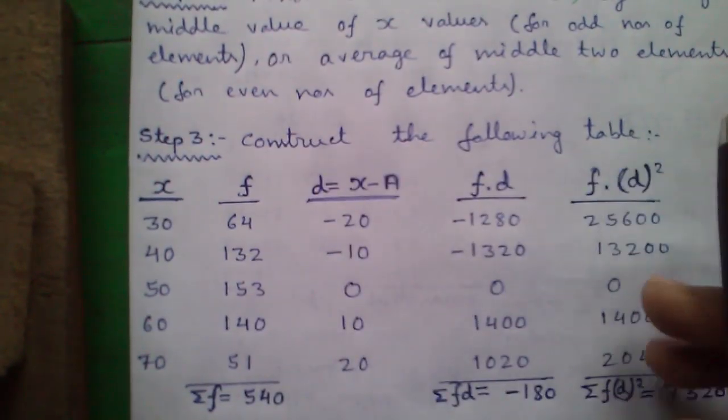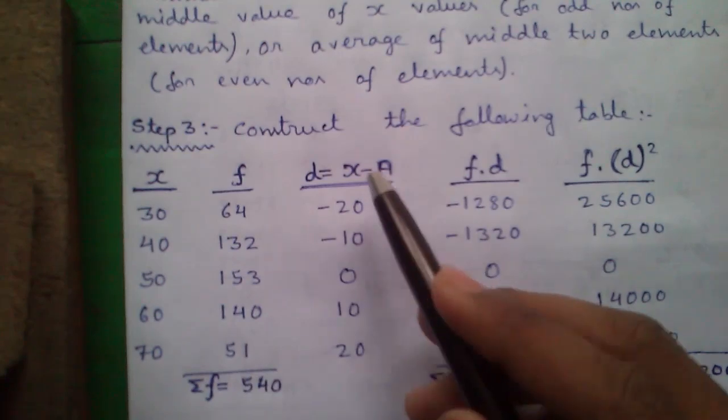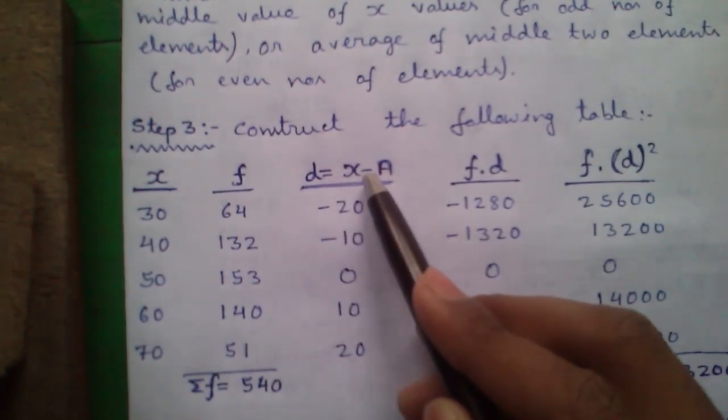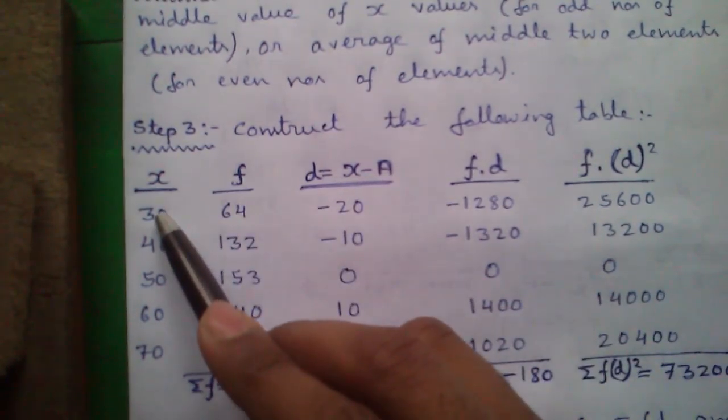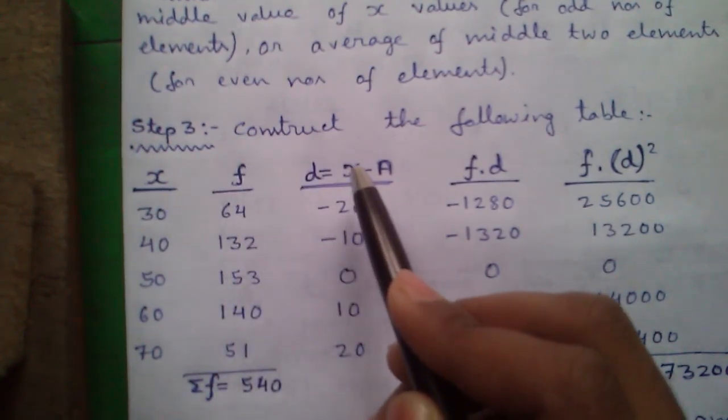Next, construct the following table. X column, F column and D equals to X minus A. That means 30 minus our A is 50.